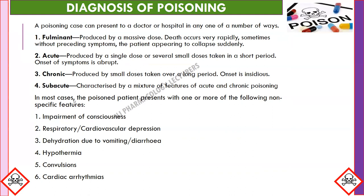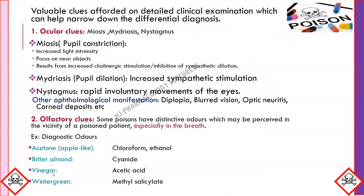In most cases, the poisoned patient presents with one or more of the following non-specific features: impairment of consciousness, respiratory or cardiovascular depression, dehydration due to vomiting or diarrhea, hypothermia, convulsions, and cardiac arrhythmias.